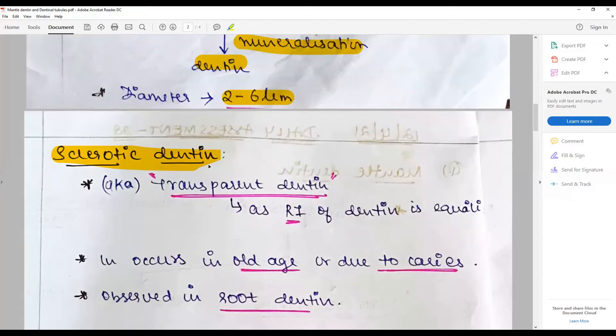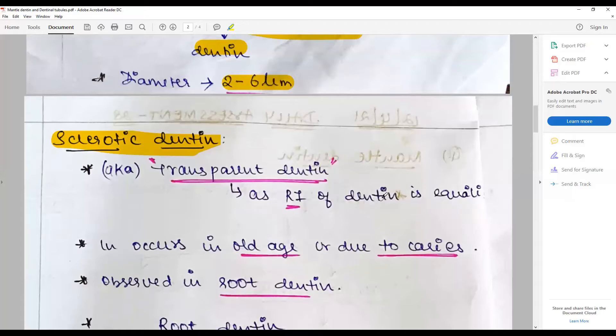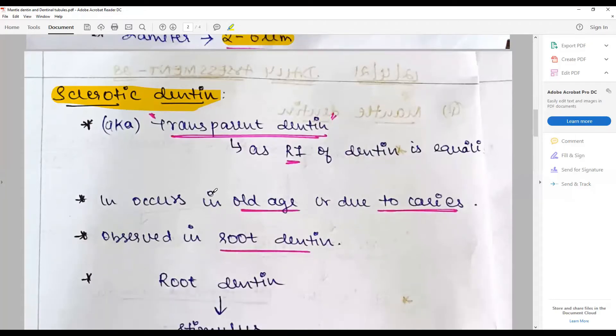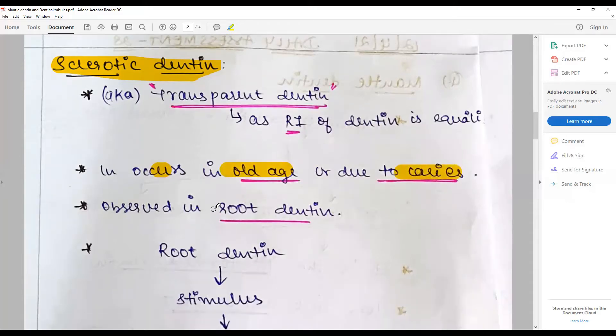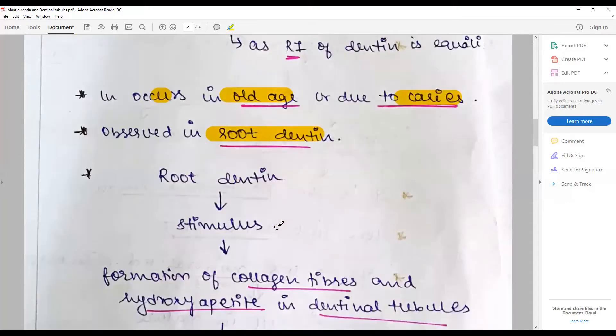Sclerotic dentine, also known as transparent dentine, is a type of age-related dentine. It occurs in old age or due to noxious stimulus, usually observed with root dentine depending upon the stimulus. The dentinal tubules or dentoblastic process dies off.